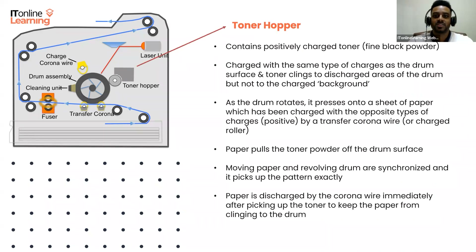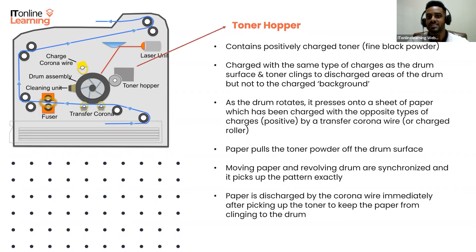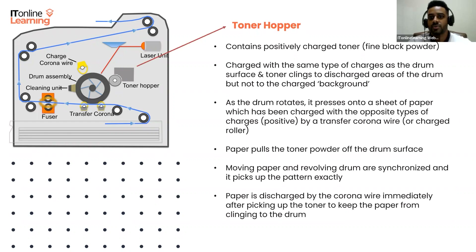This is somewhat like writing on a soda can with glue and then rolling it over some flour — the flour only sticks to the glue-coated part of the can, and you end up with a message written in flour. As the drum continues to rotate, it presses onto the sheet of paper, which has been charged with the opposite type of charges — positive — by a transfer corona wire.